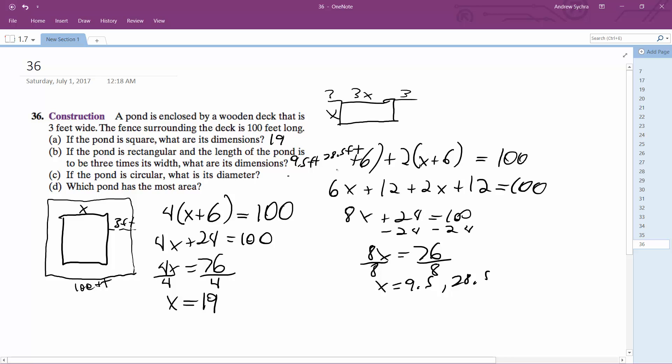If the pond is circular, what is its diameter? So that's just a circle, and then three, and then the whole thing around is 100. Circumference is equal to pi times diameter. So in this case, we'll have 100 is equal to pi times r plus 3.